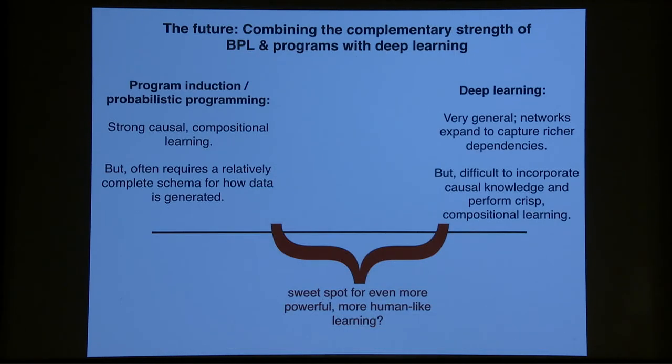So just two slides to wrap up. A few words about future directions. In my lab, we're thinking about ways of combining the strength of Bayesian program learning and programs with deep learning and we've seen this theme in the talks so far today and I think also in the talks to come. And the motivation here being that for program induction and probabilistic programming, we get strong causal compositional learning and you've seen that in the examples that I talked about. But it also often requires a relatively complete schema of how your data is generated for the characters or the fractals or even for the questions. You have to know most of the pieces of how to sample your data all the way from the top all the way to the bottom.